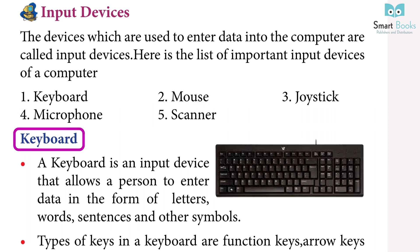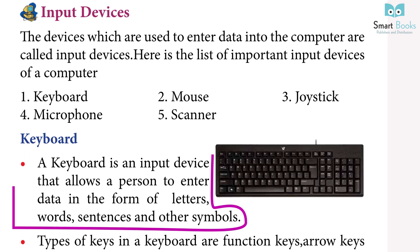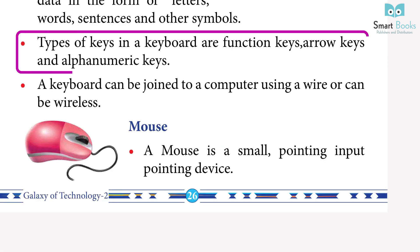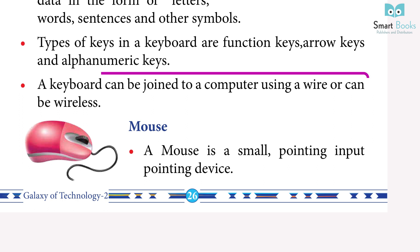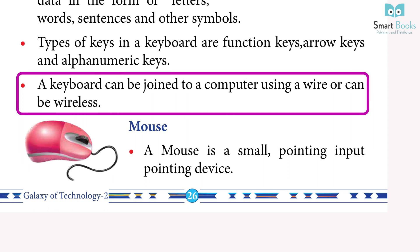Keyboard: a keyboard is an input device that allows a person to enter data in the form of letters, words, sentences and other symbols. Types of keys in a keyboard are function keys, arrow keys and alphanumeric keys. A keyboard can be joined to a computer using a wire or can be wireless.